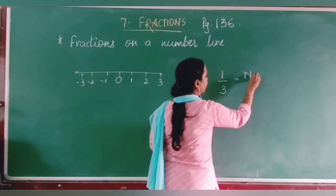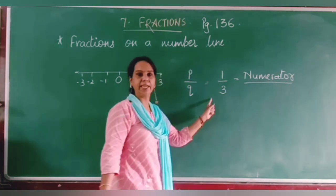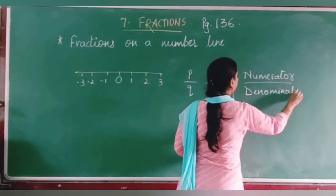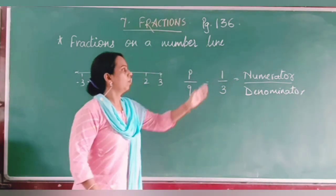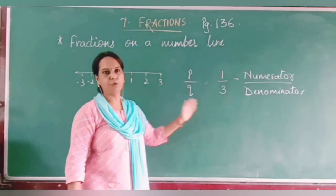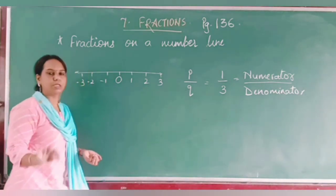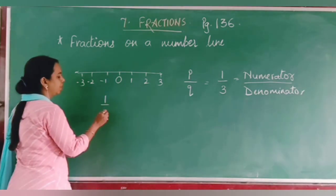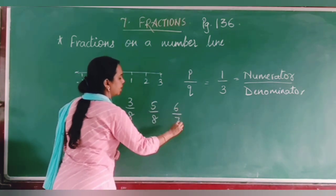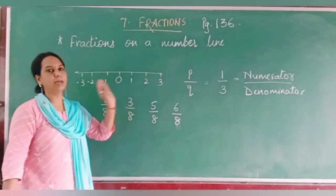Here 1 is the numerator and 3 is the denominator. We have to represent fractions in P by Q form on the number line. Suppose we are taking the numbers 1 upon 8, 3 upon 8, 5 upon 8, and 6 upon 8. These are the four numbers we have to represent on the number line.